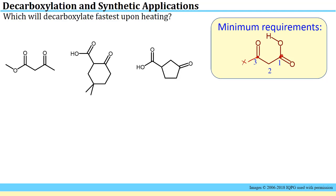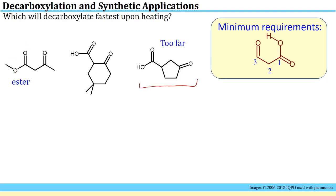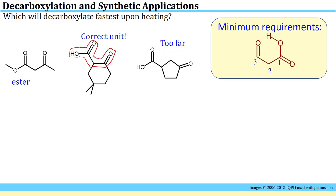When looking at a question like this, we're looking for that minimal unit within a more complicated structure. The first possible substrate has an ester, not a carboxylic acid — so without converting it first, it won't leave as CO2. The substrate on the far right has a carboxylic acid, but there are two carbons between the two carbonyl units, whereas there should only be one. The last example shows the correct unit: a carboxylic acid, one intervening carbon, and another carbonyl — that will undergo decarboxylation.